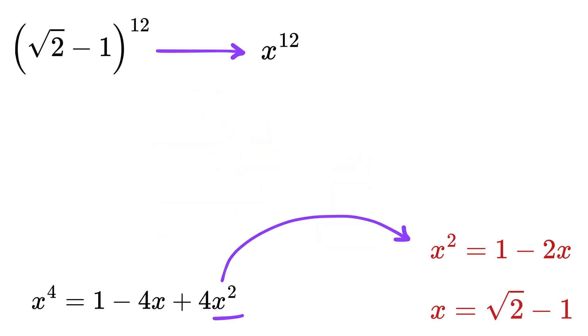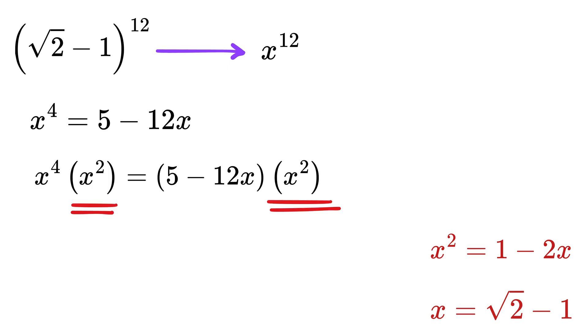Now here comes the magic. We can rewrite this x^2 as 1 - 2x. Add like terms together to get x^4 = 5 - 12x.